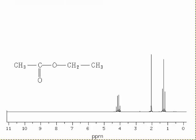Here's the spectrum for this molecule, ethyl ethyl. There are three types of hydrogen in the molecule, and we can see three peaks in the spectrum.